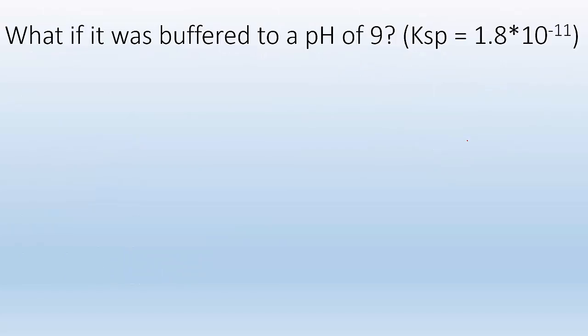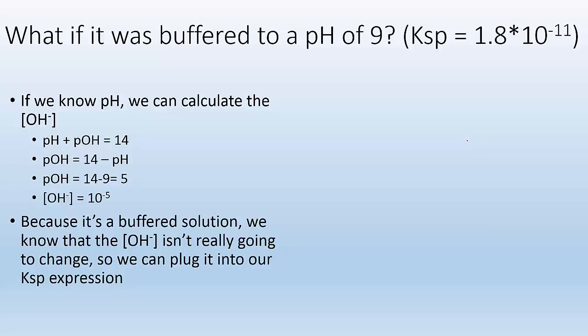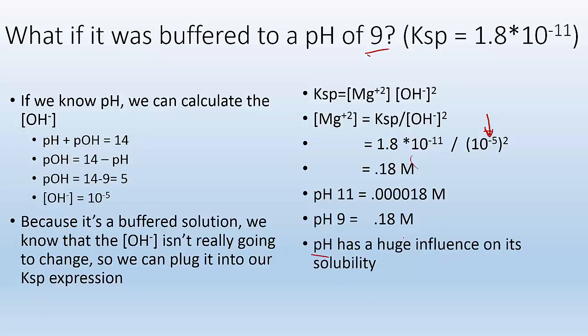So that's molar solubility of magnesium hydroxide at a pH of 11. Well, what if it was buffered to a pH of 9? Well, let's think about this. pH of 9 is going to be less basic, which means there's less OH- to start with. We should be able to dissolve more. Let's see. So again, we know the OH- concentration by looking at the pH and solving for OH. We get an OH- concentration of 10 to the minus 5. Same process, just different number. Because it's a buffered solution, we know that OH- isn't really going to change, so we can plug it into our Ksp expression as follows. Solve for it. Plug and chug. So here I'm using 10 to the minus 5 because that is my OH- concentration at a pH of 9. And I solve, and I get 0.18 molar. So at a pH of 11, it's 0.00018 molar, and a pH of 9, it's 0.18. So there's a huge difference because of the effect of pH. So pH has a huge influence on its solubility.